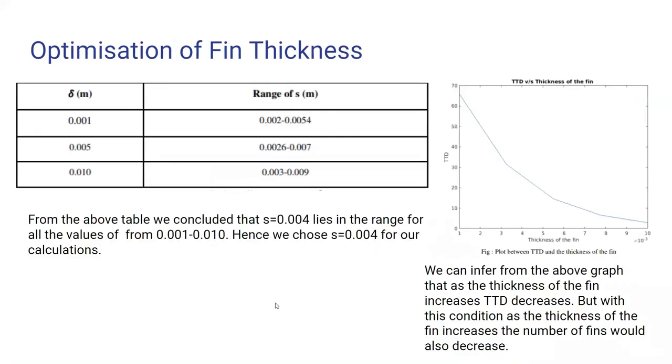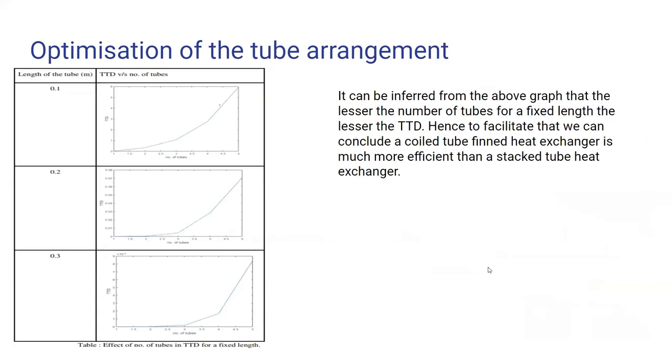We optimized the fin thickness, what should be the fin thickness for the minimum TTD. For delta value 0.001, the range is 0.0022 to 0.005. Comparing all the three ranges, we found that the S equal to 0.004 lies in the range of values from 0.001 to 0.10. Hence, we choose our distance between two fins to be 0.004.